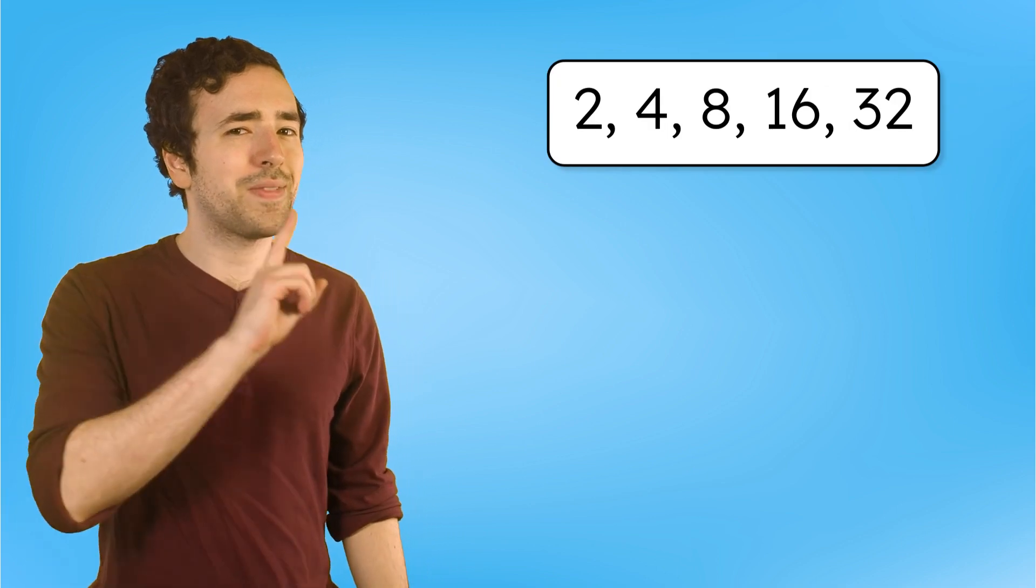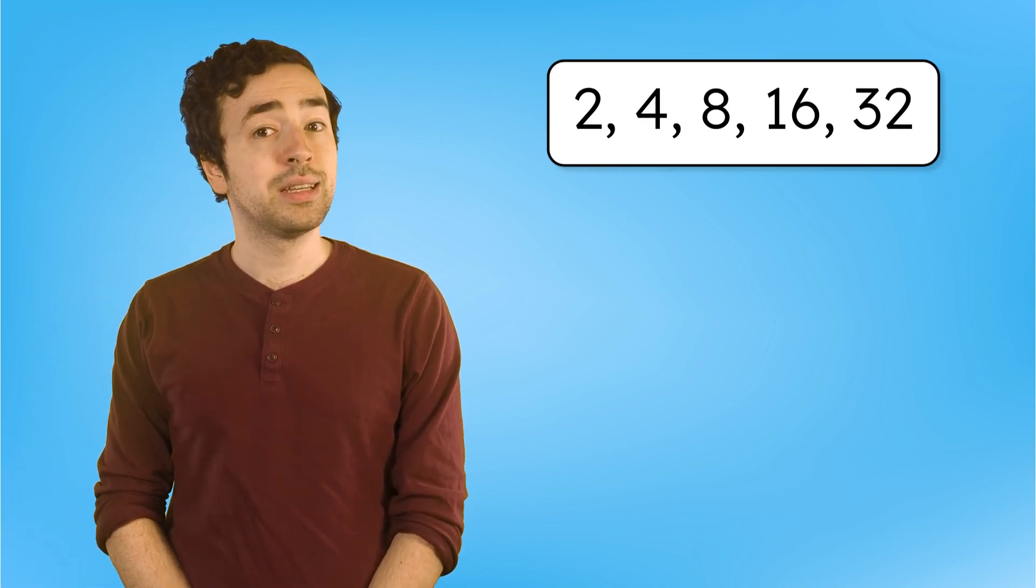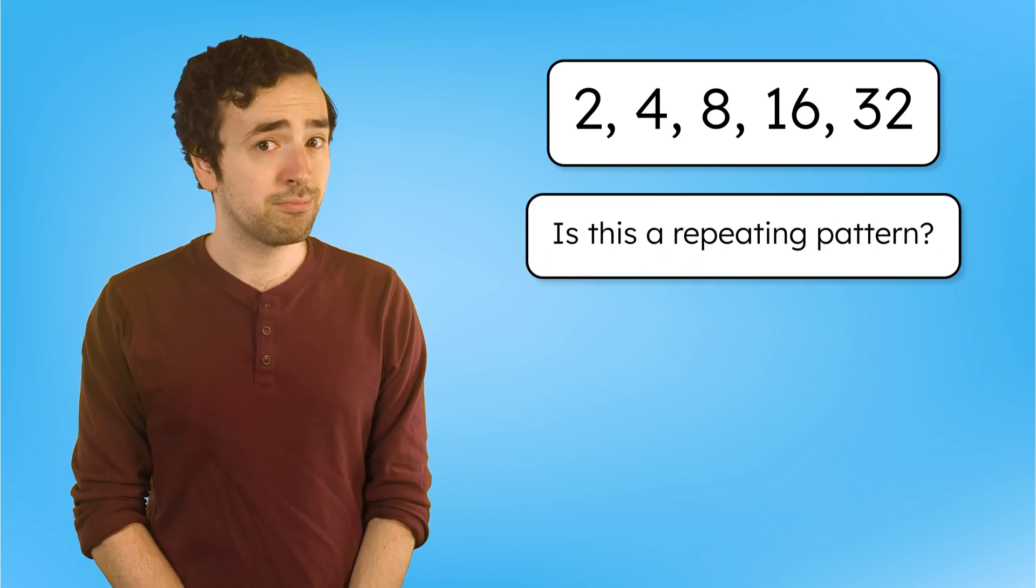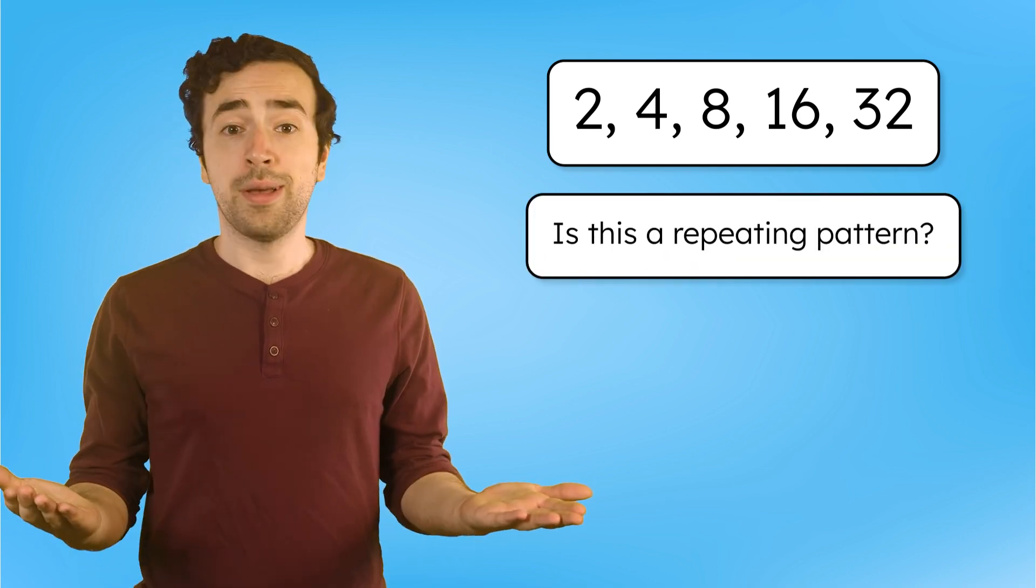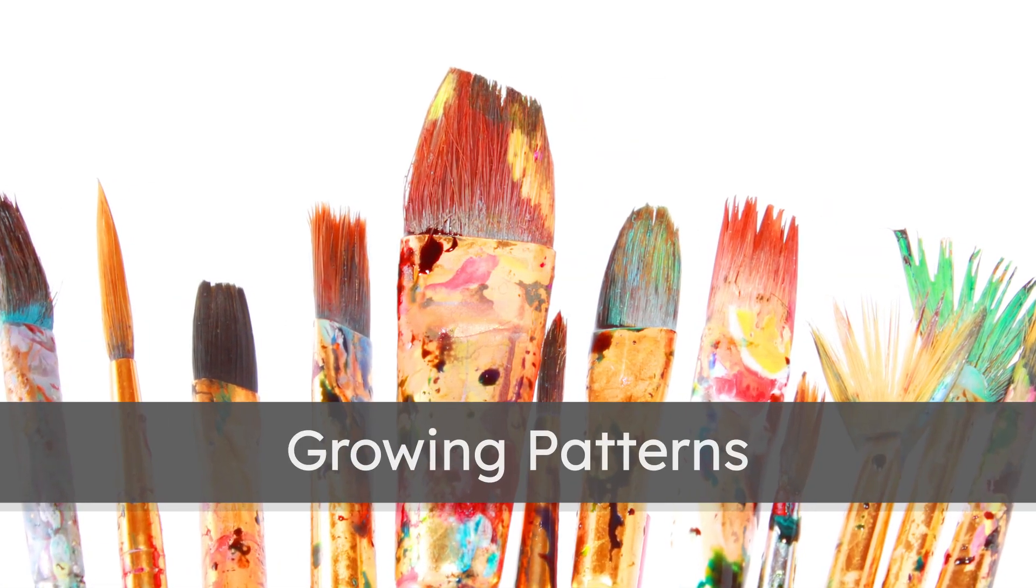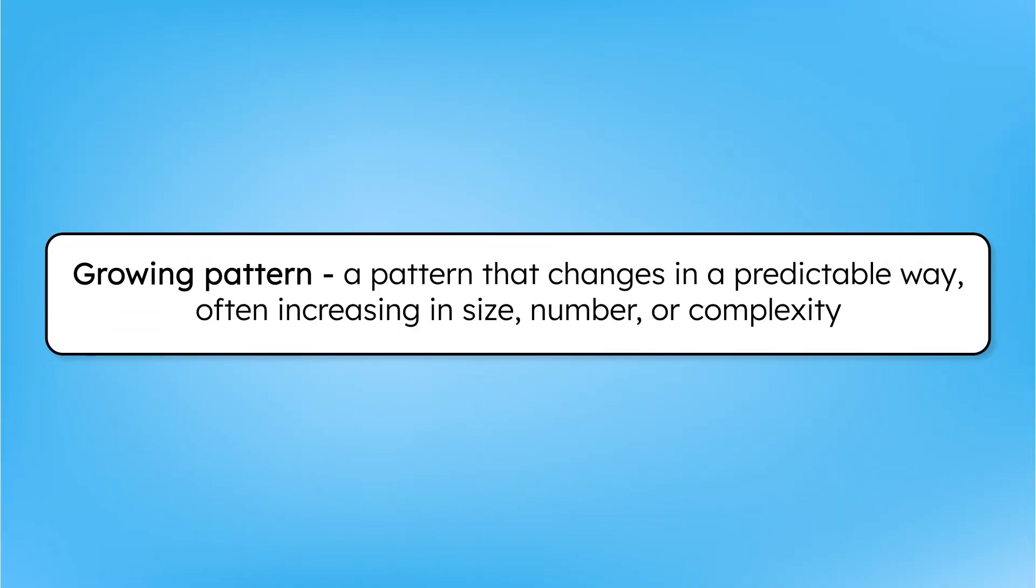Now, take a look at this pattern: 2, 4, 8, 16, 32. Is it a repeating pattern? Nope. Not all patterns cycle back to the same terms. Some build over time, following a rule that keeps going in one direction. If a pattern doesn't repeat, but changes in a predictable way, it's called a growing pattern. A growing pattern will often increase in size, number, or complexity.